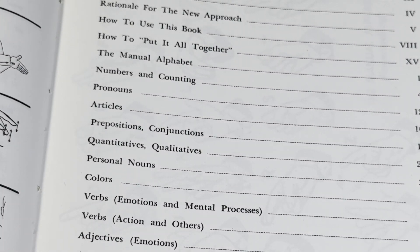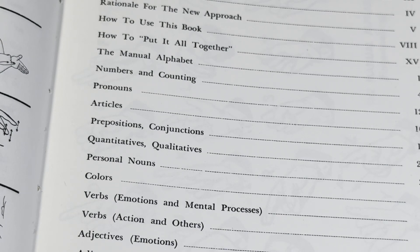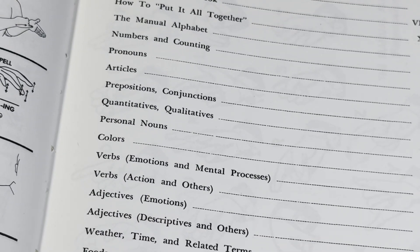Colors, verbs, adjectives, foods, animals. Things, objects, nouns. A couple different things here.